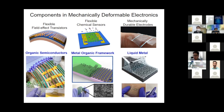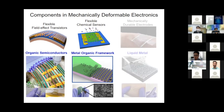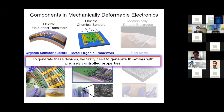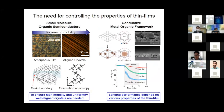In the interest of time, today I will focus on the first two of these topics. To generate these devices, we first need to generate a thin film and precisely control its properties. For organic semiconductors, we have to ensure high crystallinity in the thin film, because an amorphous film would have a very high density of grain boundaries, which would decrease the mobility.